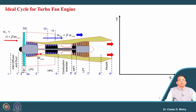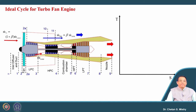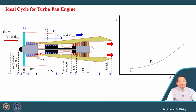Now let us move to the next topic. In the turbofan engine, we have a fan or fans depending on the configuration — it may be a high bypass ratio or low bypass ratio engine. The HP turbine is used to rotate the HP compressor, and the LP turbine is used to rotate both the LP compressor as well as the fan. In terms of the thermodynamic cycle, let us look at the ideal cycle.